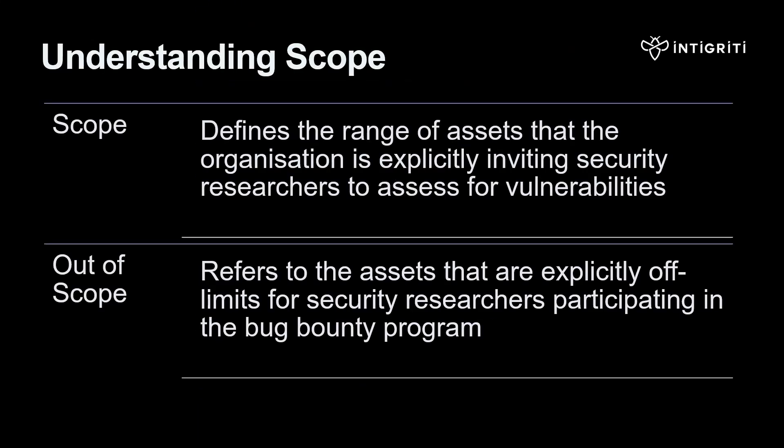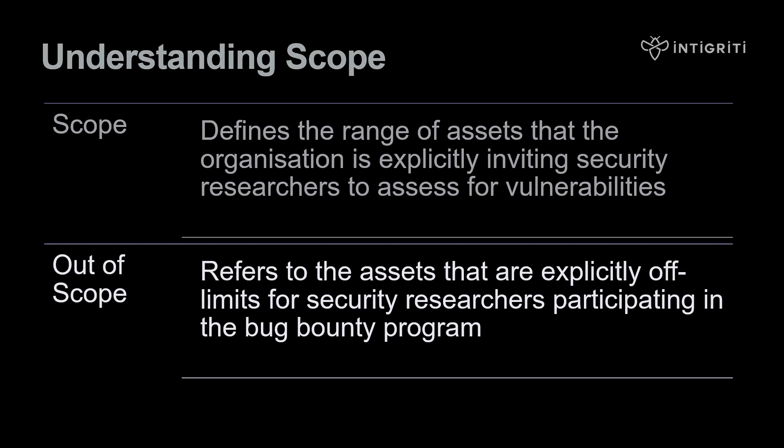The scope defines the range of assets that an organization is explicitly inviting researchers to assess for vulnerabilities. If something is out of scope, it means the asset is explicitly off-limits for testing. If you're looking at a bug bounty program and a domain is not listed in the In Scope section, it's automatically out of scope.